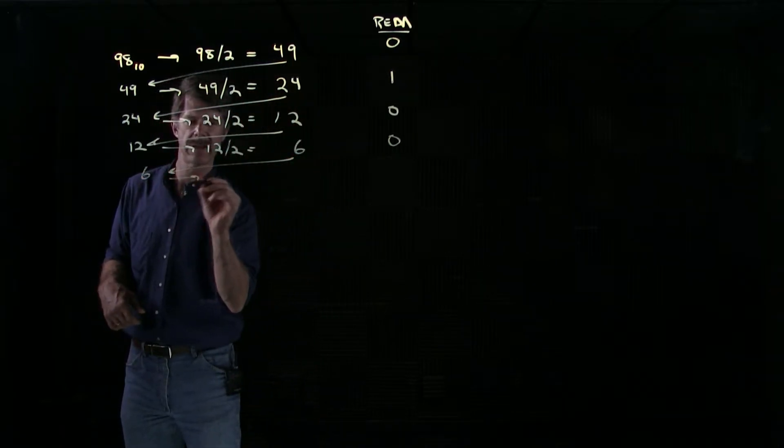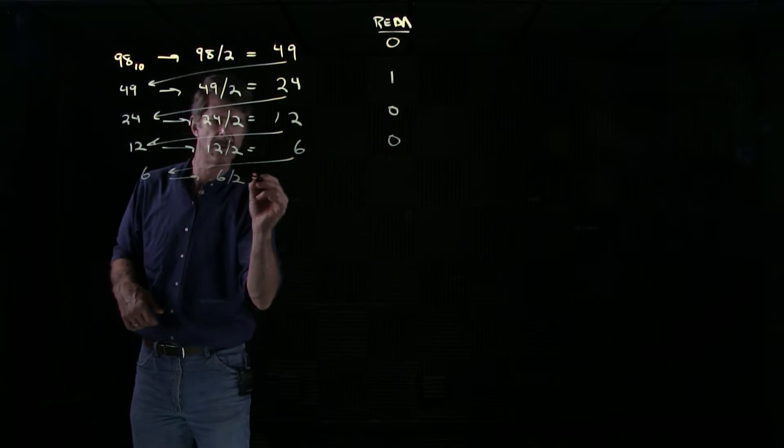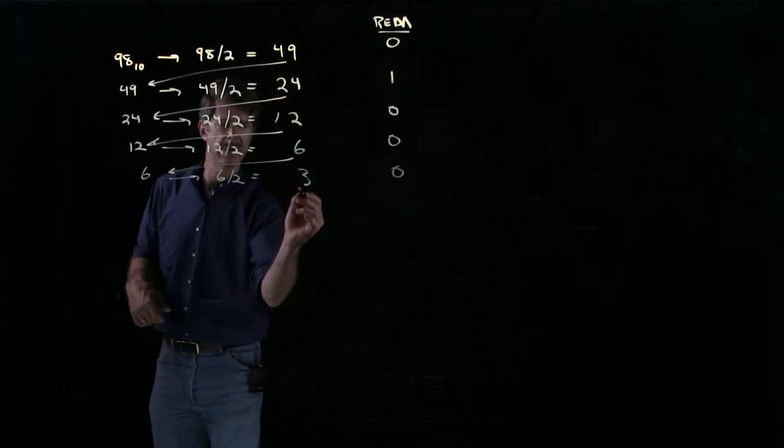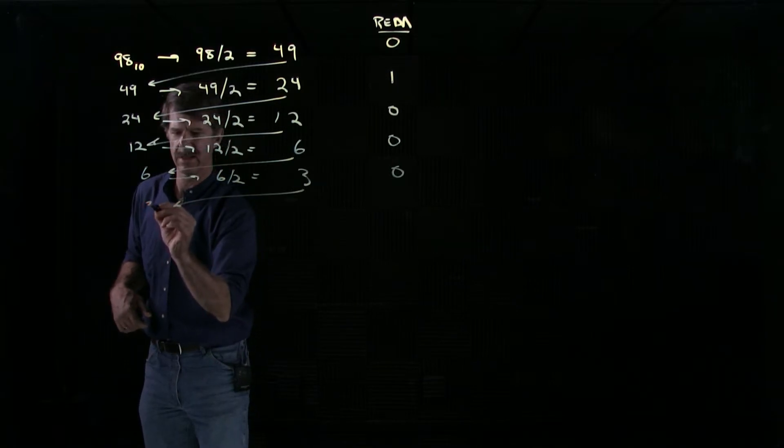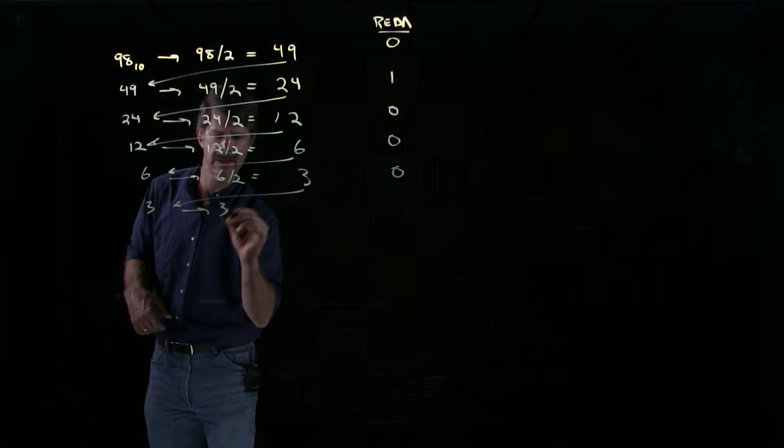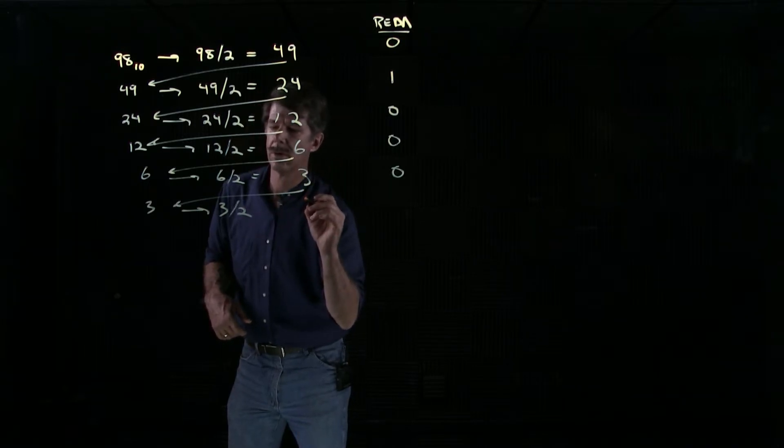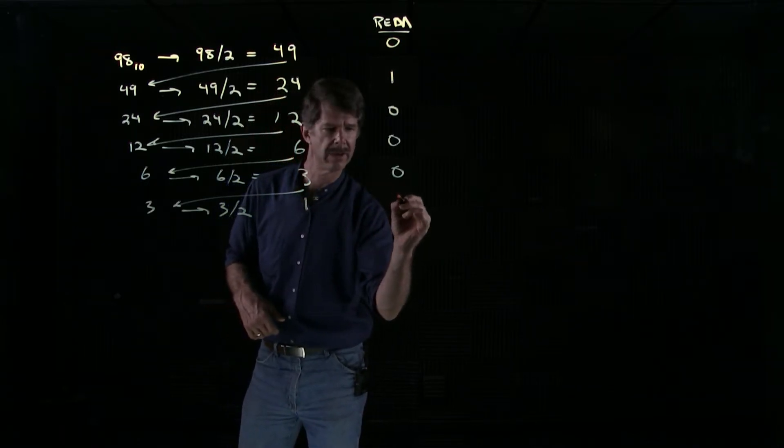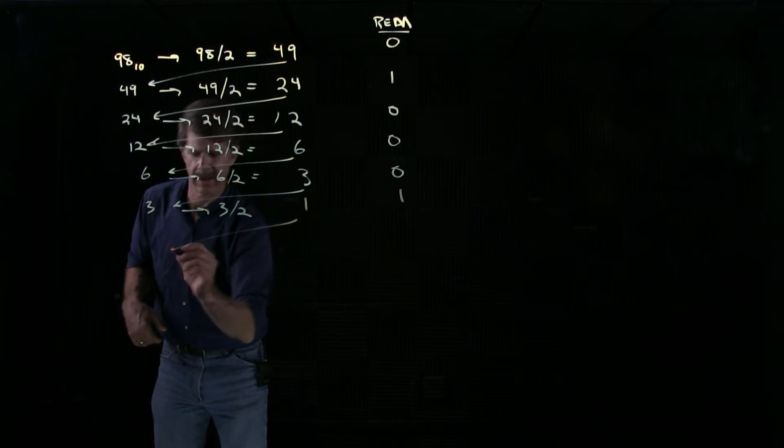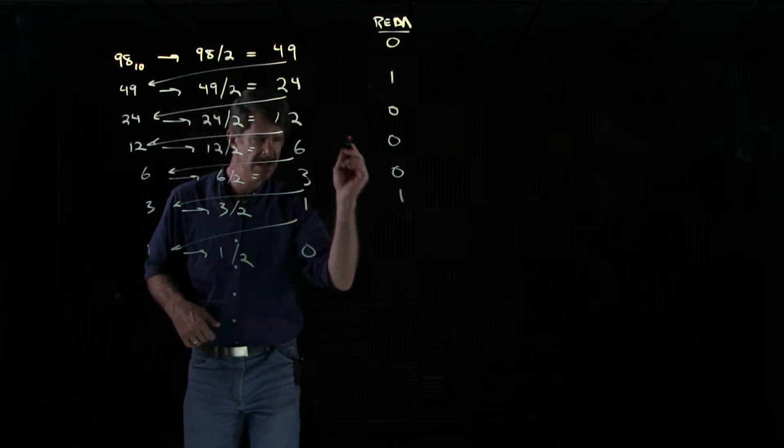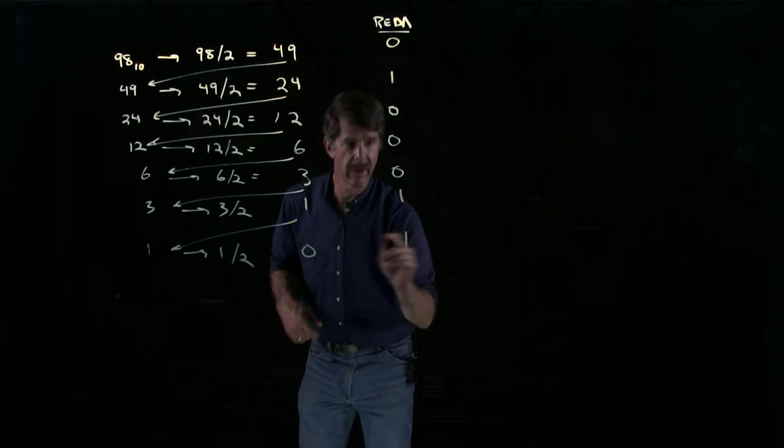We take the 6, divide it by 2, we get 3 with a remainder of 0. We take the 3, divide it by 2, we get 1 with a remainder of 1. Finally, 1 divided by 2 is 0, we're done with a remainder of 1.